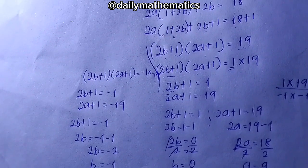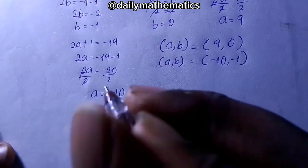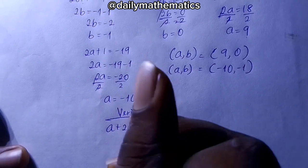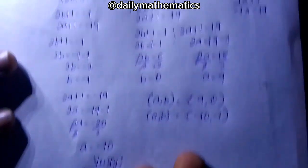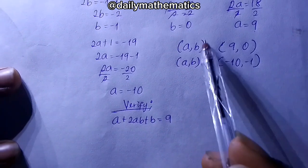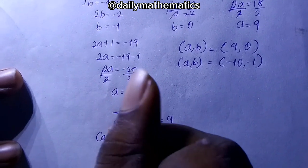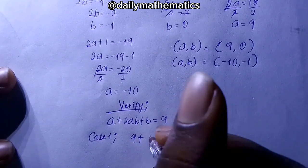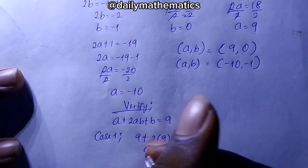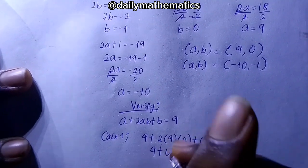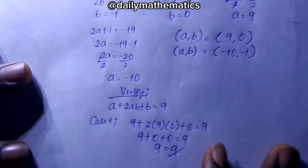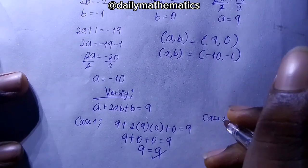Let's verify our answers. The original equation was a plus 2ab plus b equals 9. For Case 1, a equals 9 and b equals 0: 9 plus 2 times 9 times 0 plus 0 equals 9 plus 0 plus 0, which gives us 9 equals 9. Case 1 is correct.